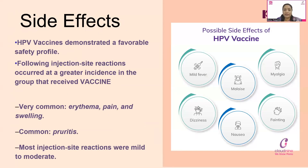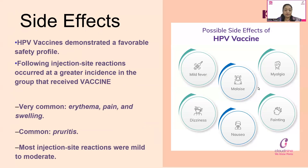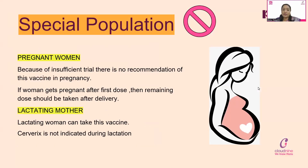Side effects of the HPV vaccine: very common are erythema, pain, and swelling at the injection site. Less common are pruritus — itching — and some people may experience mild fever, body pains, dizziness, nausea, and fainting episodes, which are very rare. In pregnant women, the vaccine is not recommended due to insufficient trials. If a woman gets pregnant after her first dose, it's better to continue vaccination after delivery. Lactating women can take Gardasil but not Cervarix.